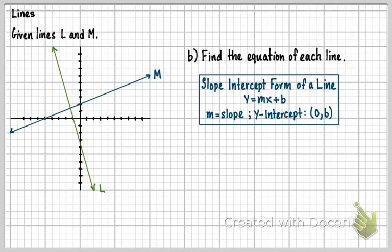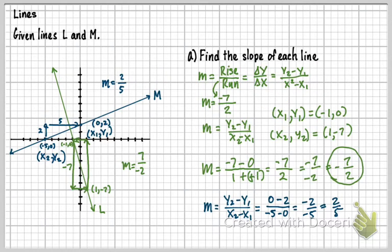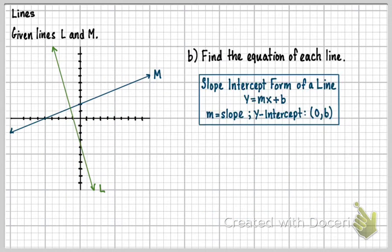I'm just going to go back to our previous work. We had this one earlier. We know that the M for the green function or the green equation is negative 7 halves. So I'm going to take that information. I know M equals negative 7 halves.